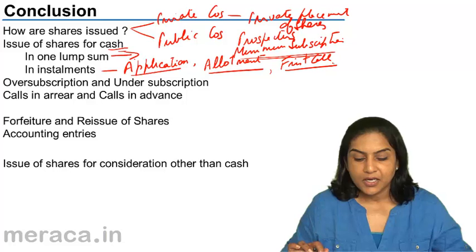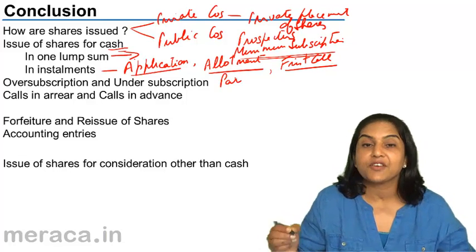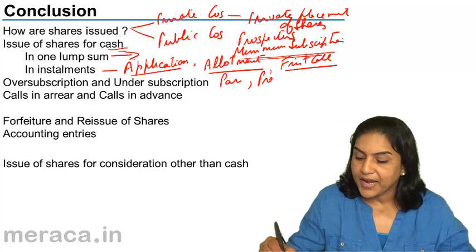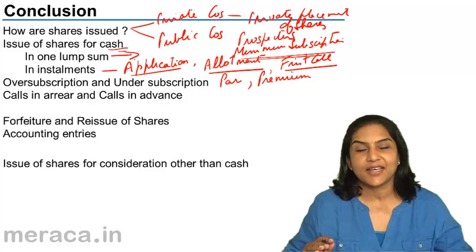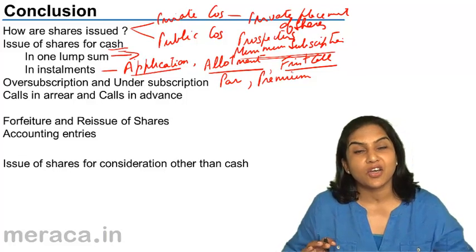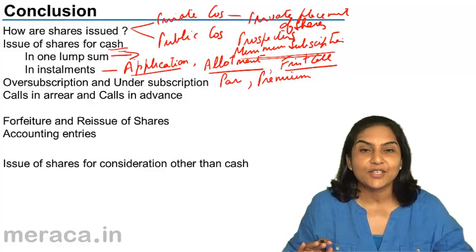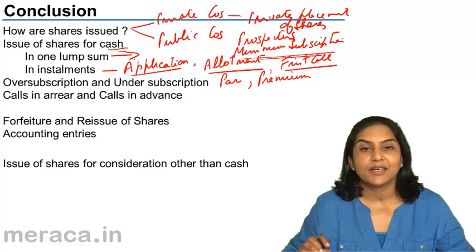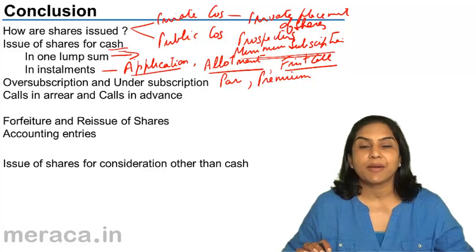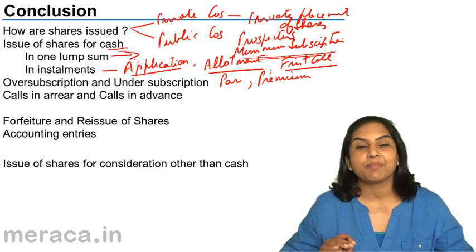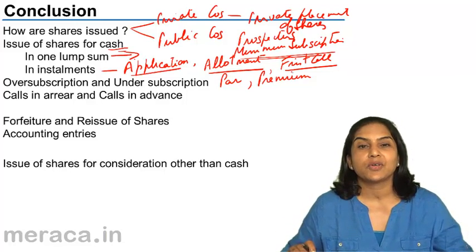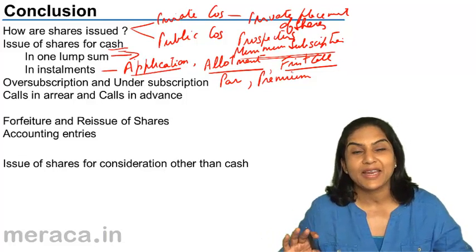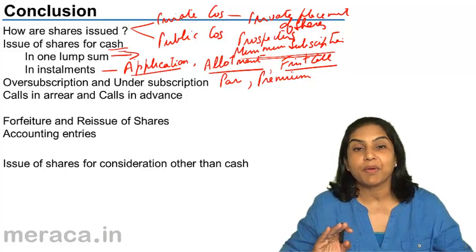Issue of shares could be at par — that is when the face value equals the issue price. It could be at premium: when the issue price is greater than the face value, the difference is credited to an account called the Securities Premium Account. As per the Companies Act, securities premium has certain limited usages: it can be used to issue fully paid shares, to write off preliminary expenses, to write off the premium on redemption of preferences, or to write off discount, expenses, and commission on the issue of any security. Beyond these, securities premium cannot be disturbed.